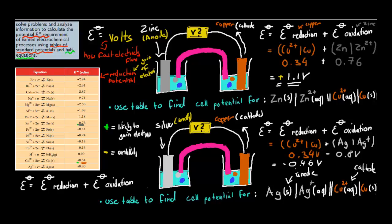Because the result is negative, that means there will be no reaction that occurs. If it's positive, the reaction will occur and you have electrons flowing. If it's negative, nothing happens. Which makes sense, because silver is a less active metal than copper. Remember that electrons only flow from the more active metal to the less active metal.